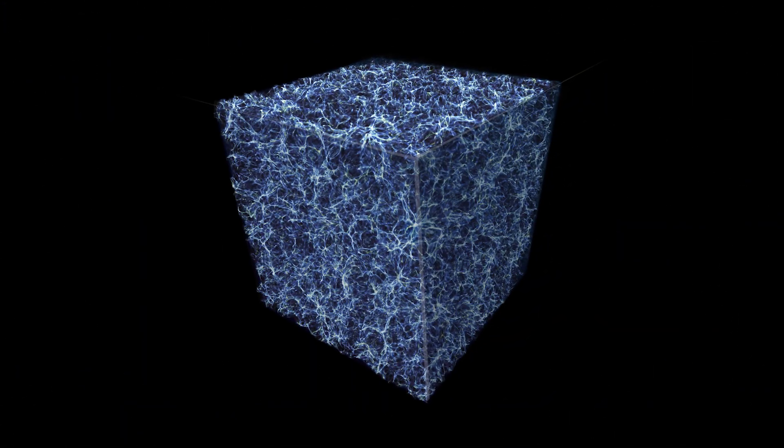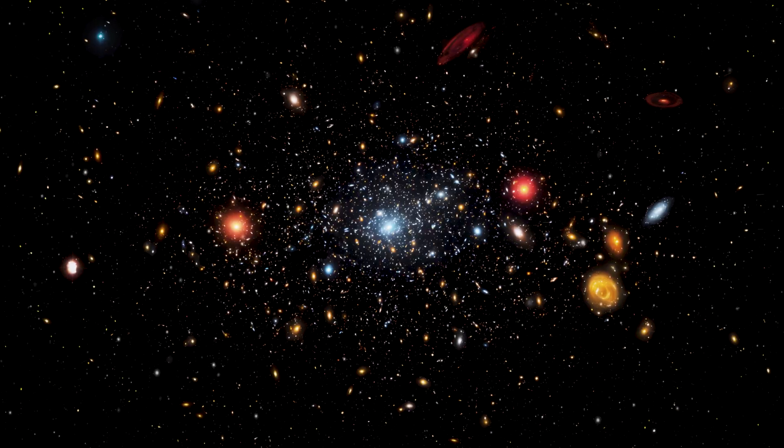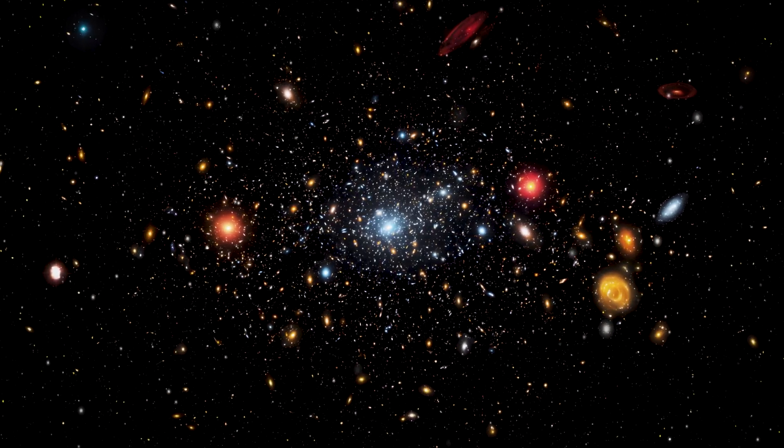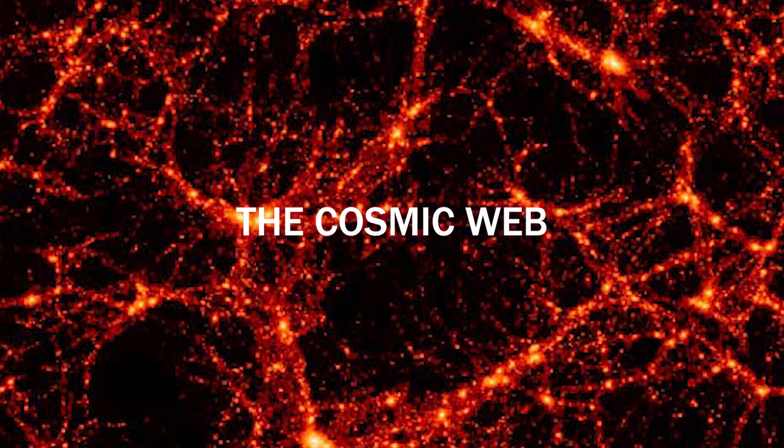The large-scale structure of the universe isn't smooth or random. It looks more like a sponge. Galaxies aren't scattered evenly. Instead, they form long strands and filaments, creating a vast structure called the cosmic web.